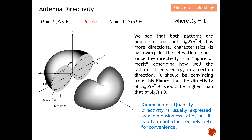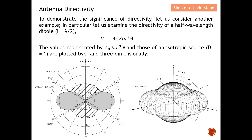Since directivity is a figure of merit describing how well a radiator directs energy in a certain direction, we can confirm that A₀·sin²θ has higher directivity than A₀·sinθ. Antenna directivity is dimensionless — it has no SI unit — however, most of the time we express antenna directivity in decibels (dB) for convenience.